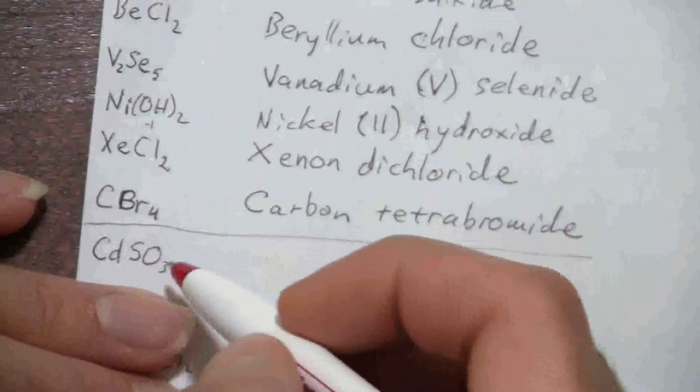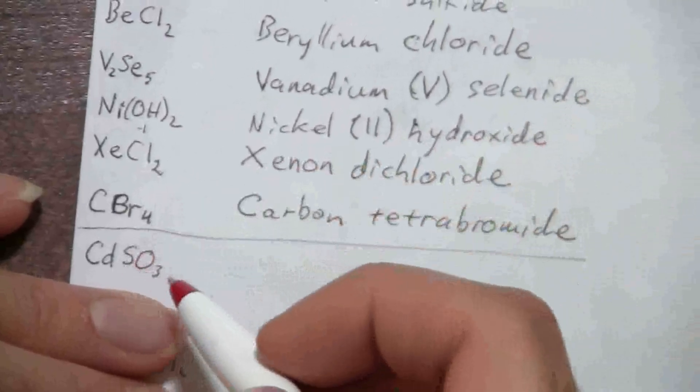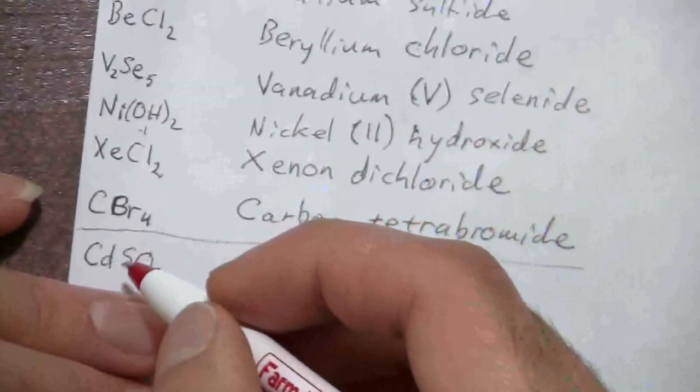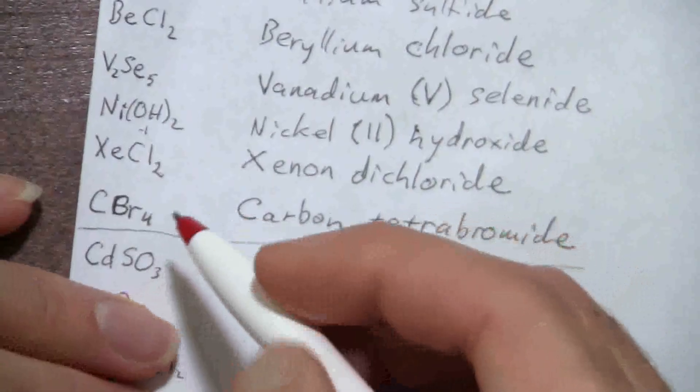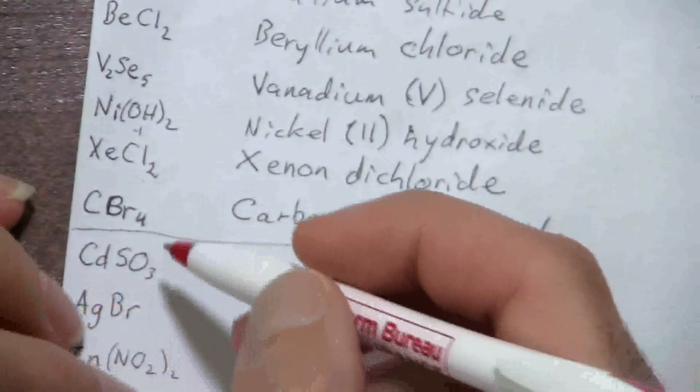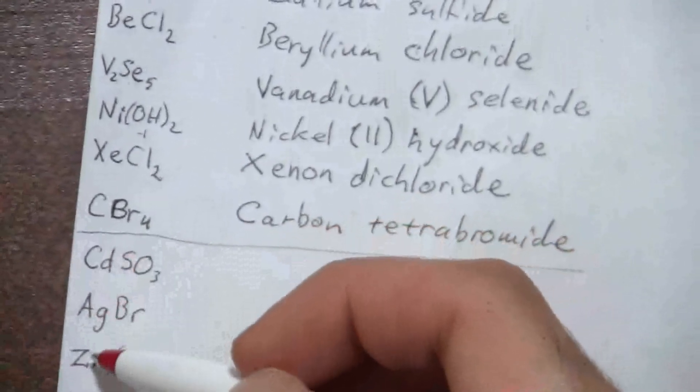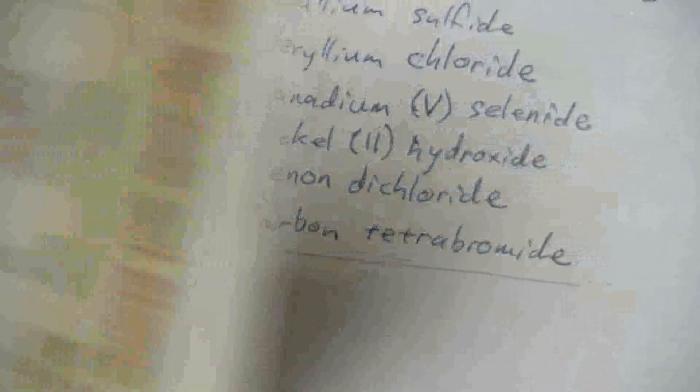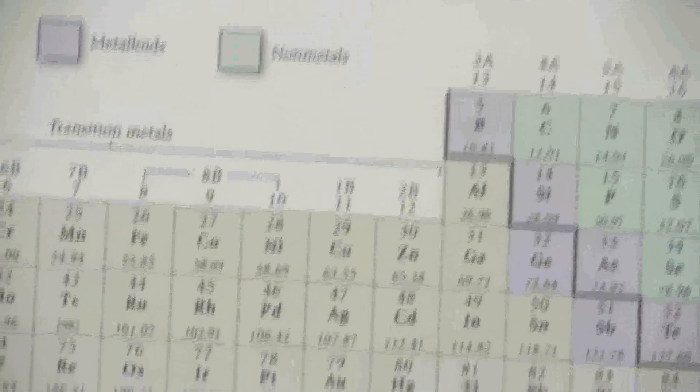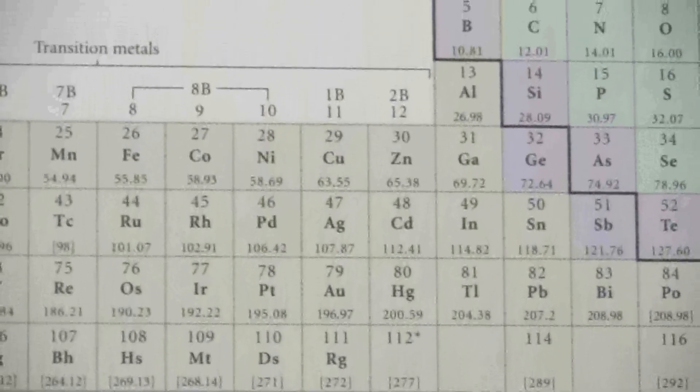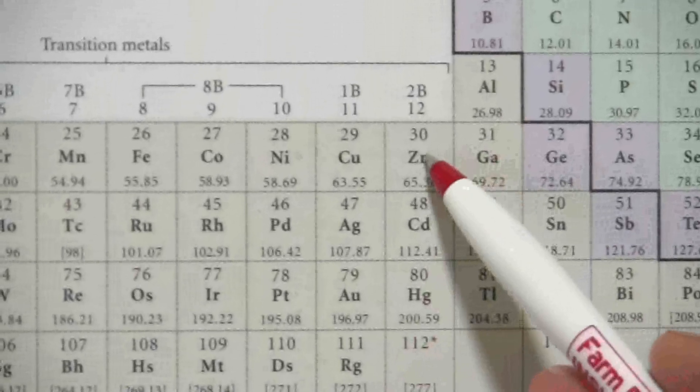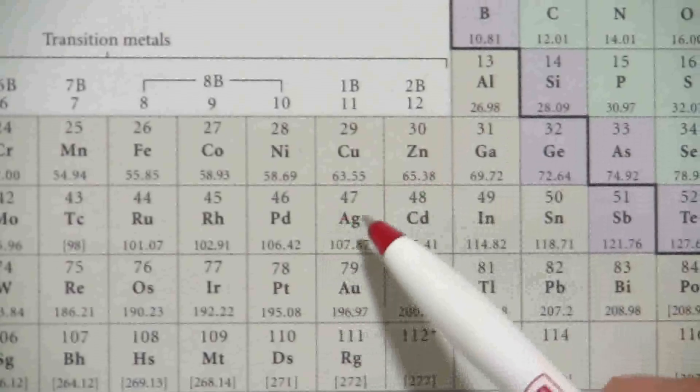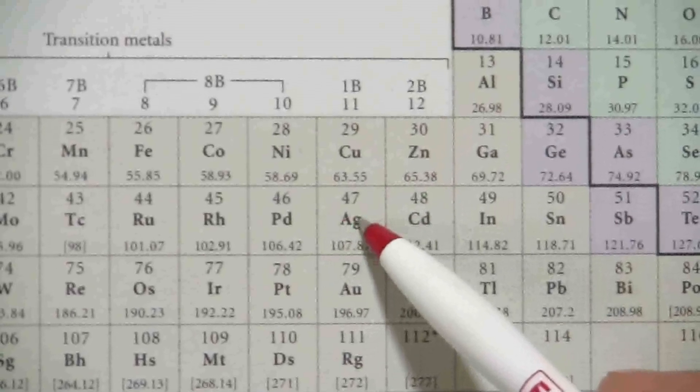SO4 is sulfate, SO3, one less, is sulfite. Cadmium, however, is a transition metal, but I threw a few of them here, there's a few exceptions: cadmium, silver, and zinc. And if we look at the periodic table, these are some of the exceptions to the rule. Zinc and cadmium have a positive two charge, silver has a positive one.